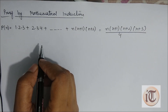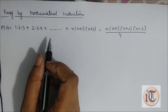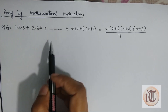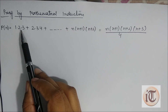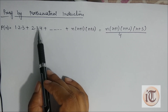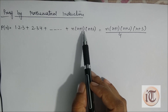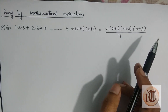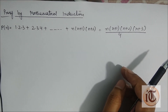Hello friends, now we are going to discuss some important university questions of mathematical induction. The first question is that we have to prove that 1·2·3 + 2·3·4 + ... up to n(n+1)(n+2) equals n(n+1)(n+2)(n+3)/4 with the help of mathematical induction.